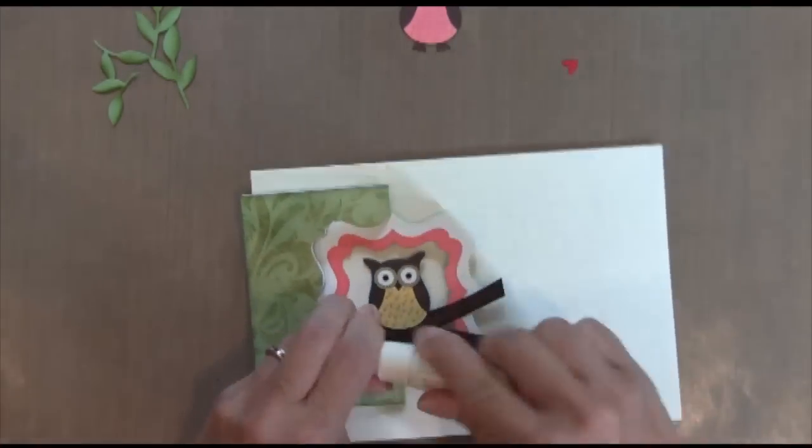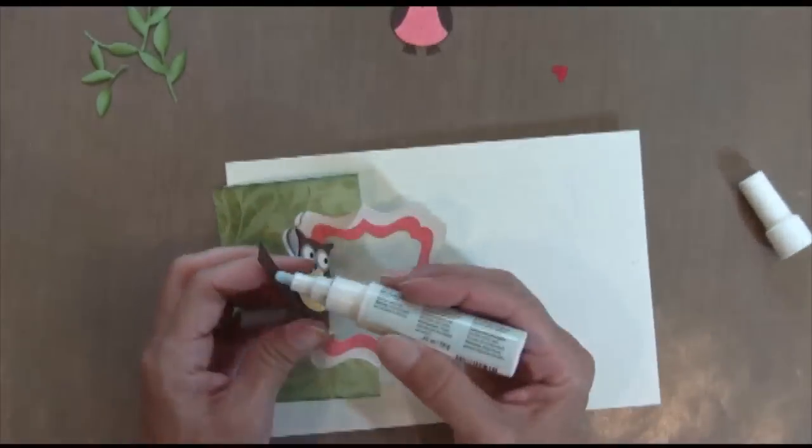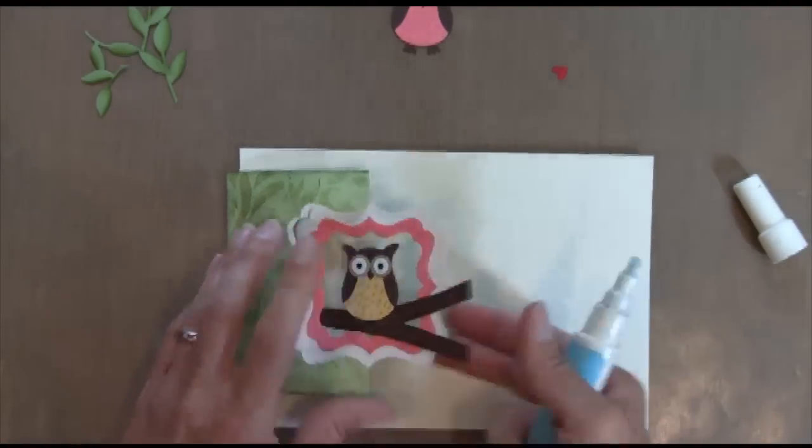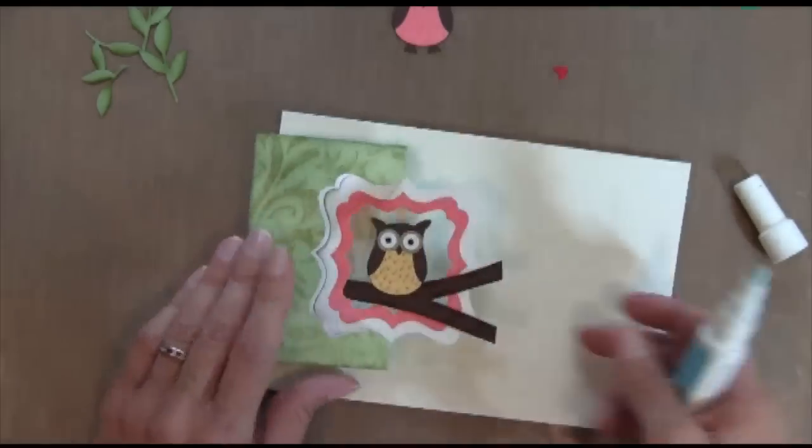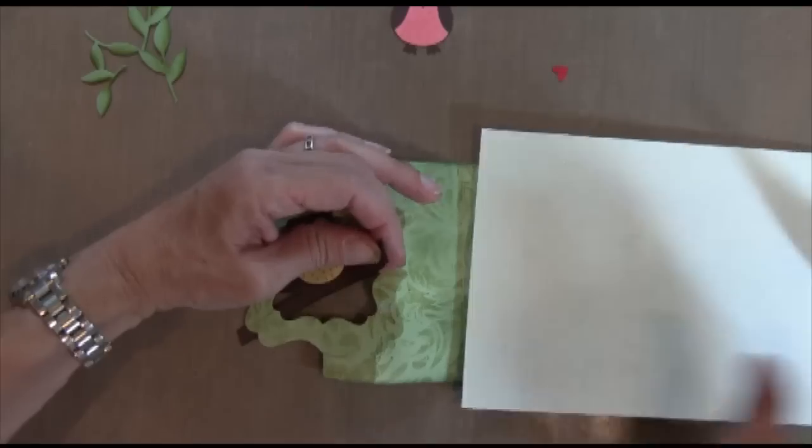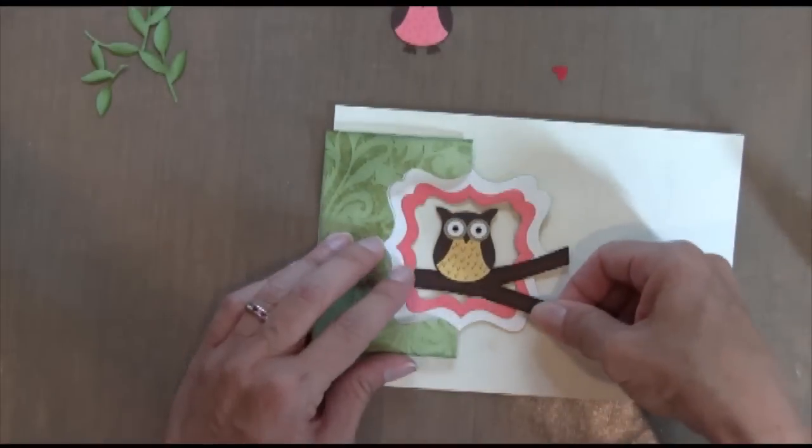And then I'm going to take my two-way glue pen, and I'm going to glue the branch to the frame. And then I kind of went through the frame, so I'm going to glue it to the other side from the inside.